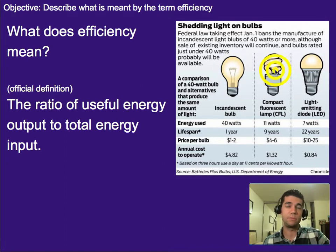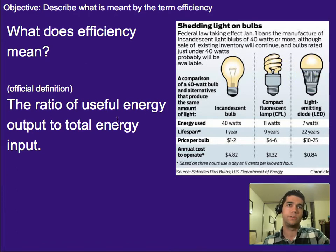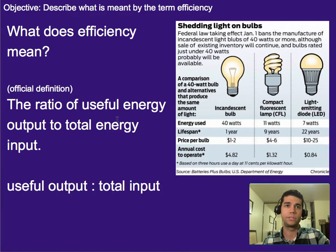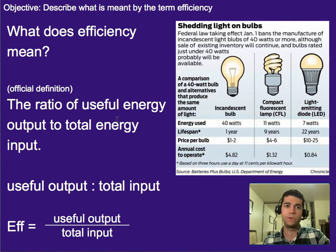These are significantly more efficient and LEDs even more efficient in that sense. So the official definition is useful energy output to total energy input. You could also write that as useful energy out to total energy input, or write it as a ratio of useful energy output to total energy input.